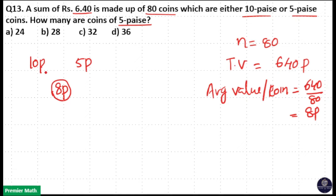Then when you use the allocation, 10 minus 8 paise is equal to 2 paise, 8 minus 5 paise is equal to 3 paise. So 3 is to 2 is the ratio of 10 paise and 5 paise coins.